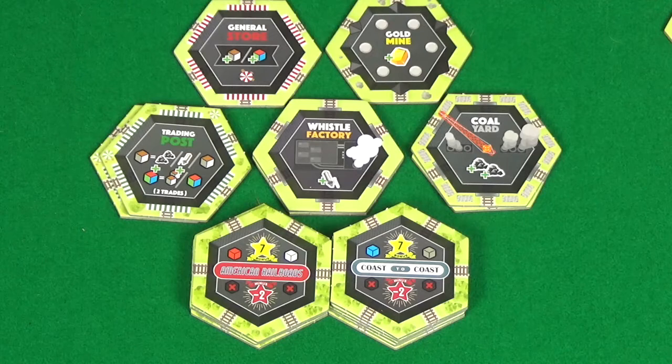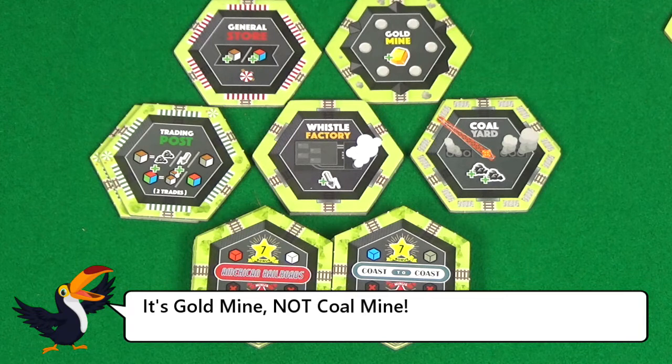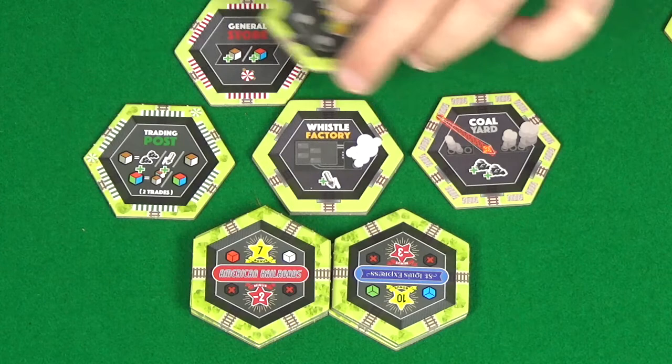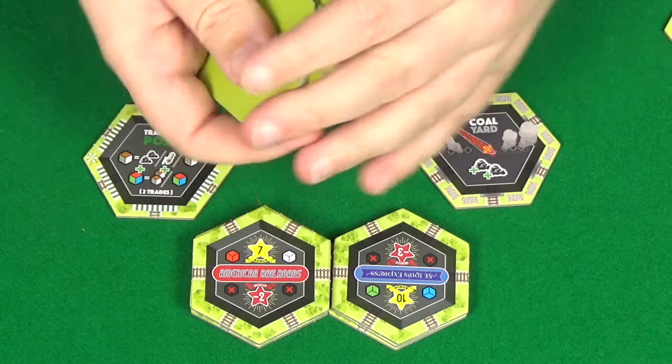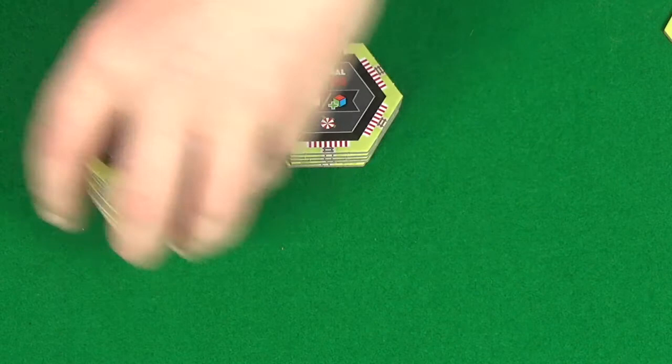To do this, you'll start by separating out your special tiles. So you've got ten town tiles, two trading posts, two whistle factories, two coal yards, then a coal mine and a general store. Take a coal yard and a trading post, and then two random city tiles. Then take your gold mine, your general store, and your whistle factories. Shuffle these up and add one to the tiles that you've just taken aside. Then all the rest of the special tiles you can put away for now. You'll need them again in a minute.